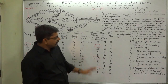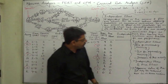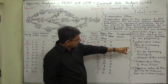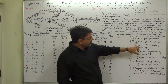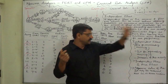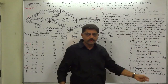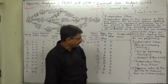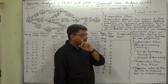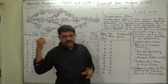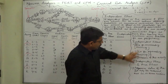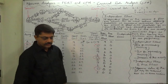For calculation, the formula can be somewhat complex. Independent float equals the earliest start time for the succeeding activity minus the latest finish time for the preceding activity, minus the duration of this activity.